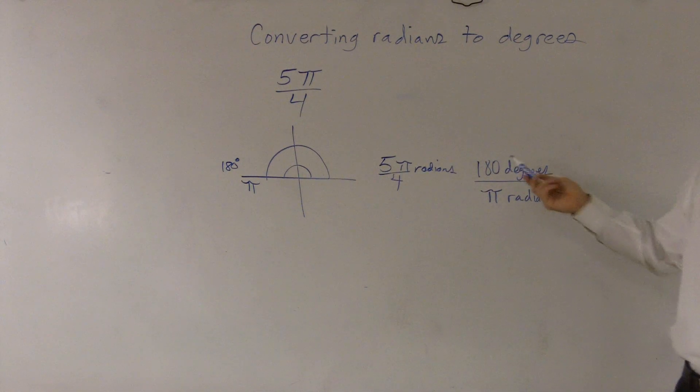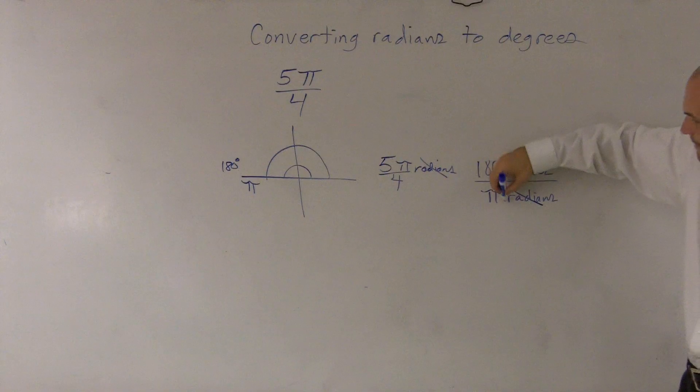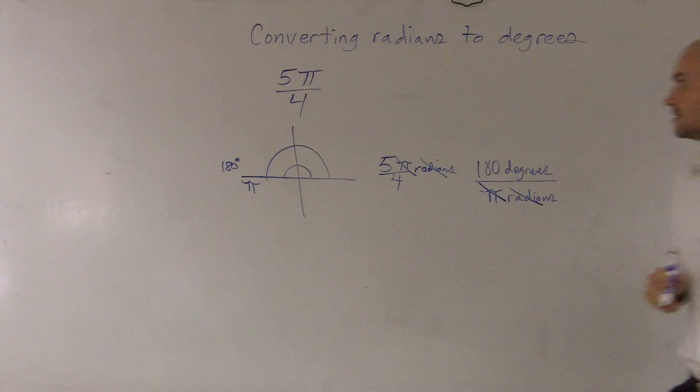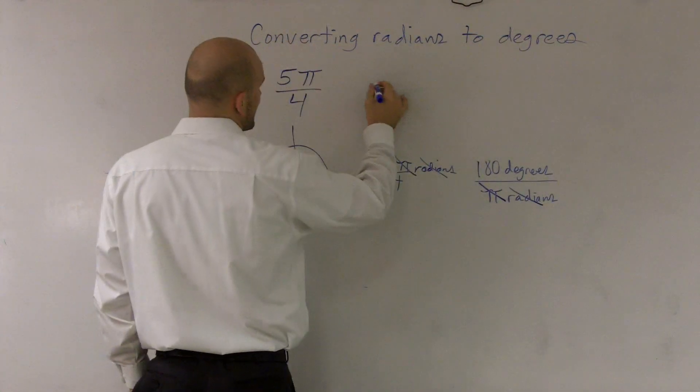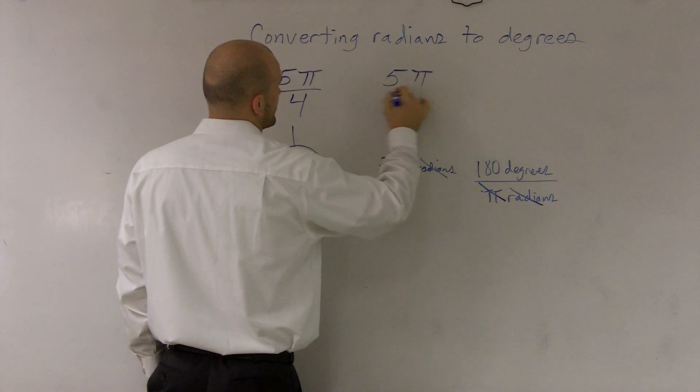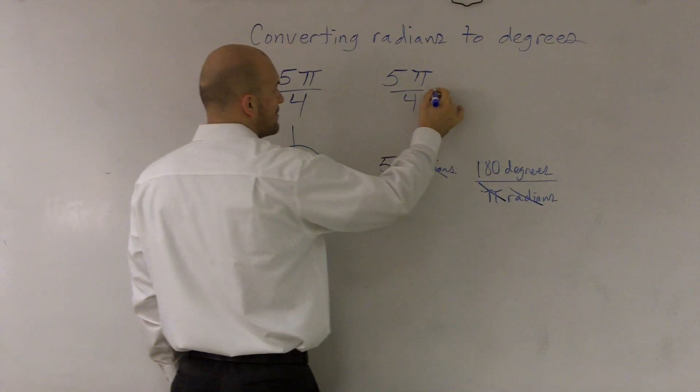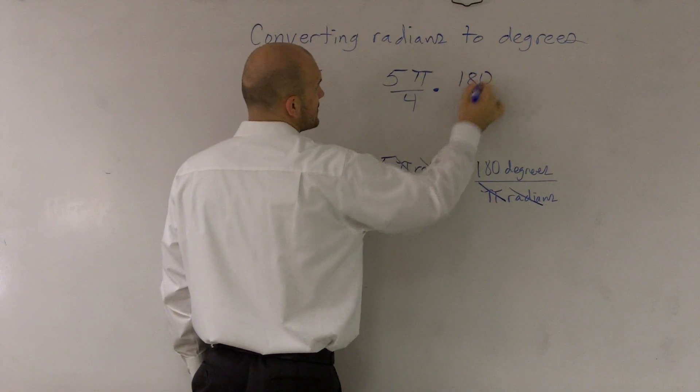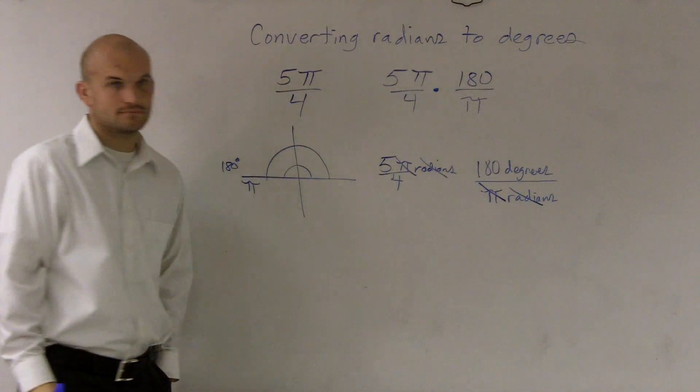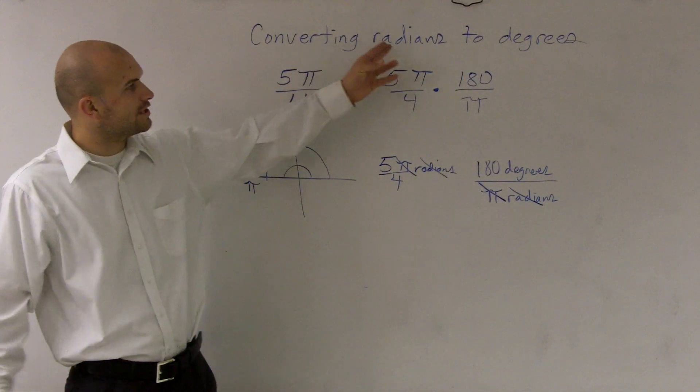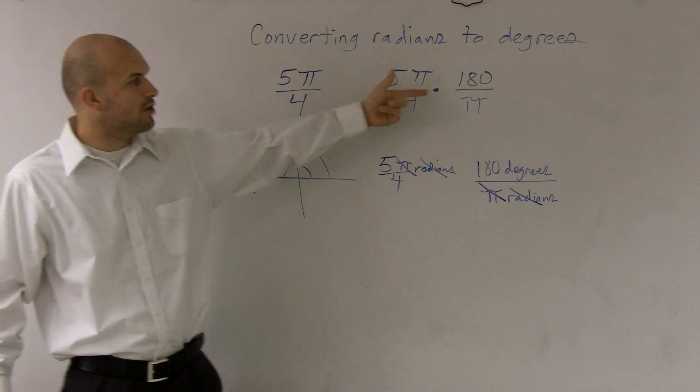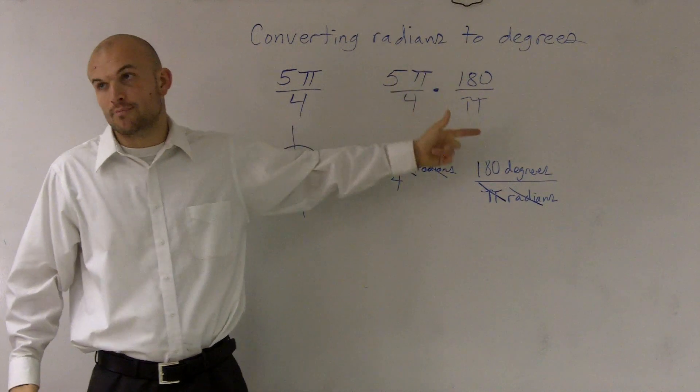Because 180 is equal to π. It's that ratio. But then what you'll notice is my radians are going to be cancelled out. My π's will cancel out. And then all I have to do is do this multiplication. So what you guys do is if I have, so I take 5π over 4 and I multiply it by 180 divided by π. So when you want to find converting radians to degrees, you multiply by the ratio of 180 over π.